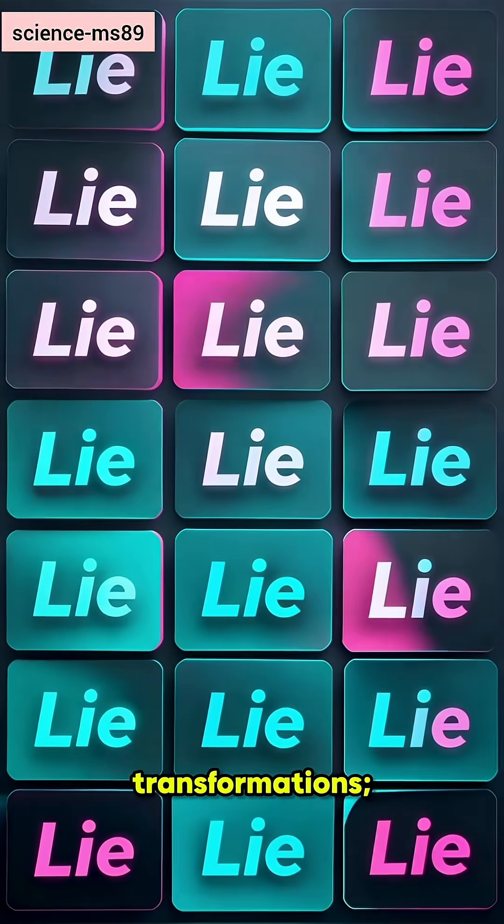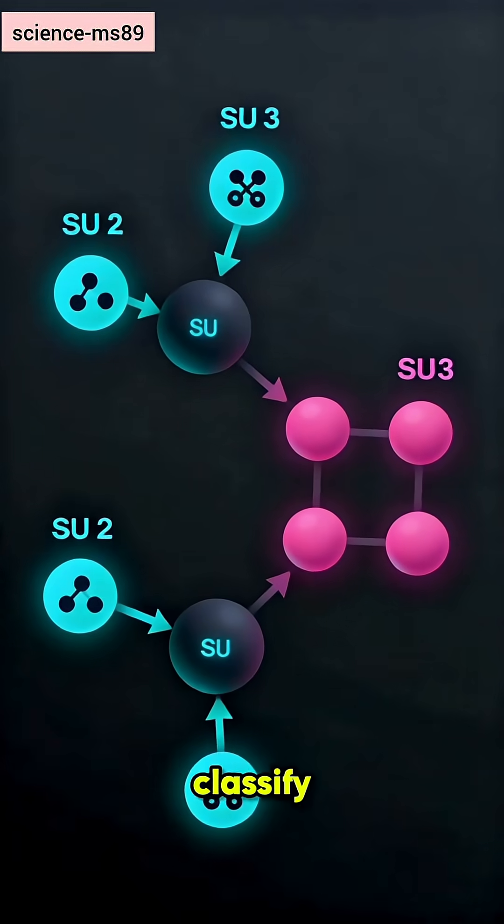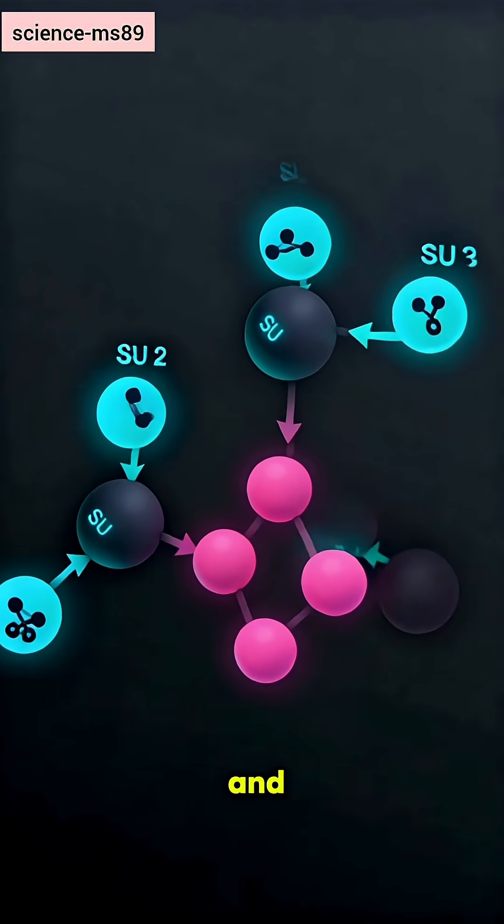Groups organize transformations. Lie groups and algebras classify particles as representations and constrained interactions.